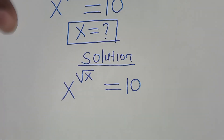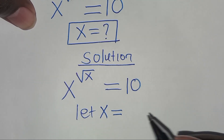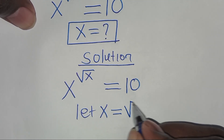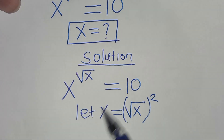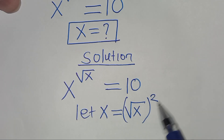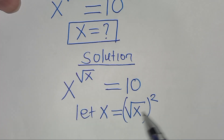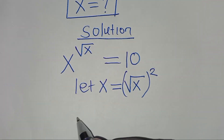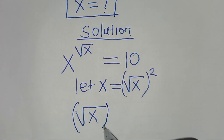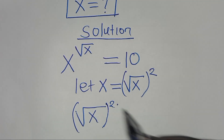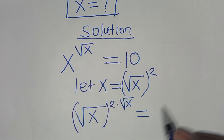The first step to do here: let x be equal to square root of x, squared — that is, x is the same thing as (√x)². So let's substitute x with (√x)², so that we have (√x)² multiplied by √x, this is equal to 10.